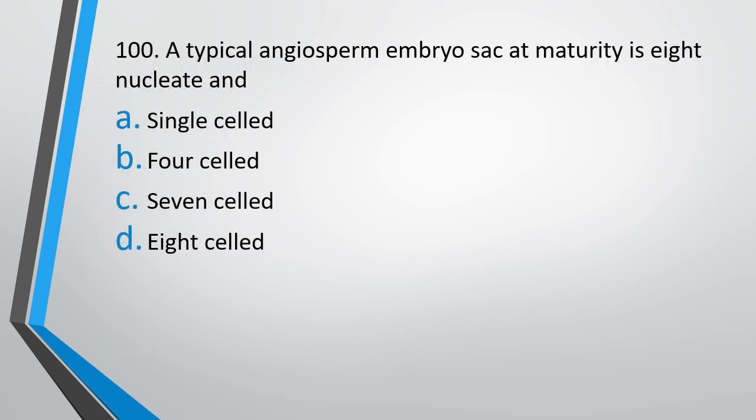Question number 100. A typical angiosperm embryo sac at maturity is: 8-nucleate and single-celled, four-celled, seven-celled, or eight-celled. The correct answer is option C — it is a seven-celled, eight-nucleated structure.